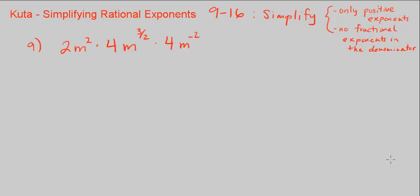This is Kuta's Simplifying Rational Exponents, numbers 9 through 16. The instructions are to simplify, and they also say your answer should only contain positive exponents with no fractional exponents in the denominator.